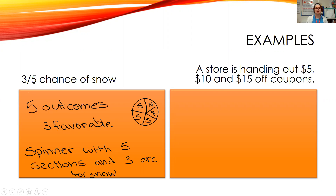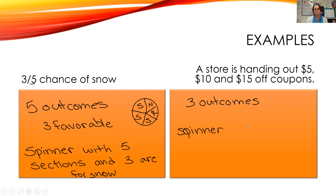A store is handing out $5, $10, and $15 off coupons. That is three different outcomes. A good way to represent three outcomes is a spinner with three sections. And because each of our outcomes are different — $5, $10, and $15 — we don't have to specify anything special about the sections.